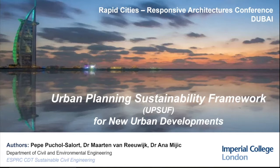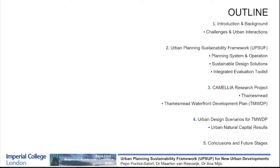I would like to talk about the outline we're going to follow in today's presentation. I'll start with some introduction and background of the work. Secondly, we'll show what this Urban Planning Sustainability Framework is and its different parts. Third, I will explain what the Camellia Research Project is and our main case study, Thamesmith. Fourth, we'll see some urban design scenarios and the results. At the end, I'll also talk about some conclusions and future stages.